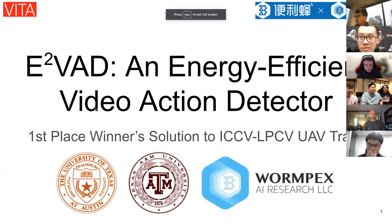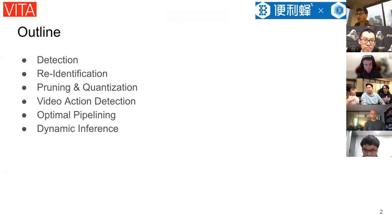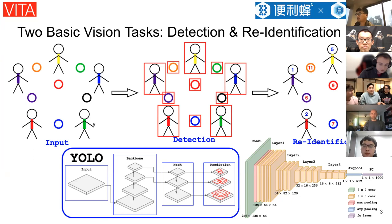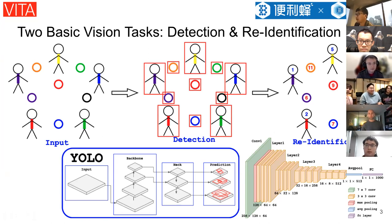Our team has members from UT Austin, Texas A&M, and OnePacks AI Research. Our outline: first we introduce two basic tasks — detection and re-identification — then pruning and quantization for model compression, followed by video action detection, and finally two proposed modules to further save energy: optimal pipelining and dynamic inference. We used a YOLO model for detection to get bounding boxes for balls and persons, and ResNet-18 as a re-identification model to obtain identity labels.